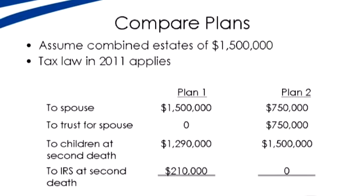Option two is to leave the excess above the estate tax exemption to the spouse, and then create a trust with the amount equal to the exemption.